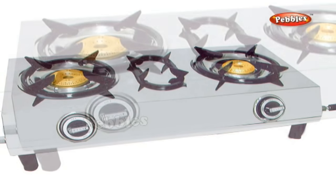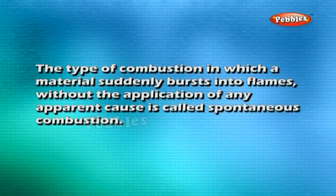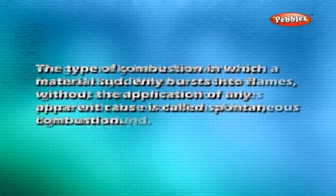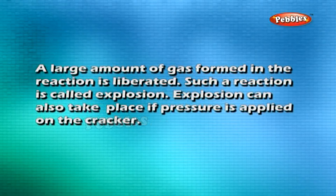Types of combustion activity: bring a burning matchstick or a gas lighter near a gas stove in the kitchen and turn on the knob of the gas stove — please try this under the supervision of an adult. The type of combustion in which a material suddenly bursts into flames without the application of any apparent cause is called spontaneous combustion. When a cracker is ignited, a sudden reaction takes place with the evolution of heat, light, and sound. A large amount of gas formed in the reaction is liberated — such a reaction is called explosion. Explosion can also take place if pressure is applied on the cracker.